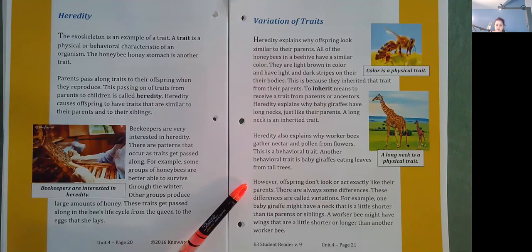However, offspring don't look or act exactly like their parents. There are always some differences. These differences are called variations. For example, one baby giraffe might have a neck that is a little shorter than its parents or siblings. A worker bee might have wings that are a little shorter or longer than another working bee.